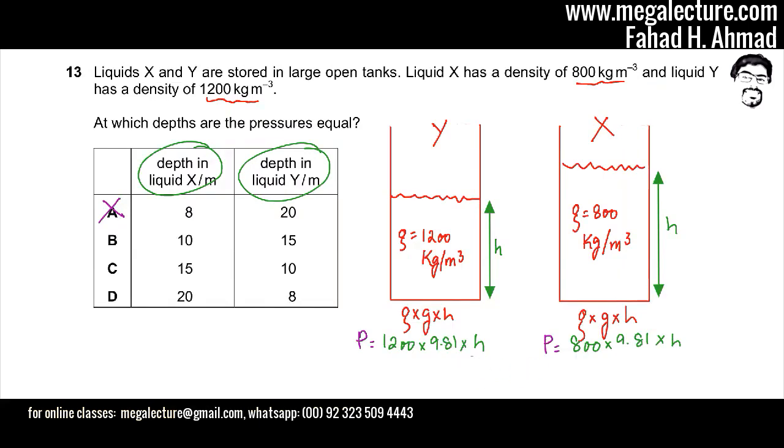So in option B, h is 15, so let's put 15 over there in Y. And you can see that it's 10 in X, so let's put 10 over there and let's see if we're going to get the same answer. So 15 into 1200 and 10 into 800. This would be 8000, and if you multiply 12 and 15, you're not going to get a number that would be around 8. So these two values are also not coming out to be exactly the same. So let's cut option B as well.